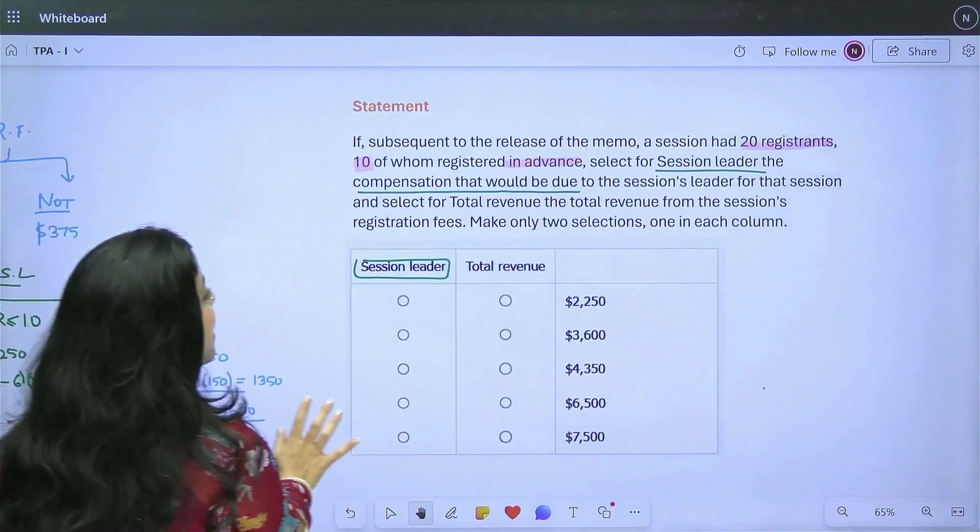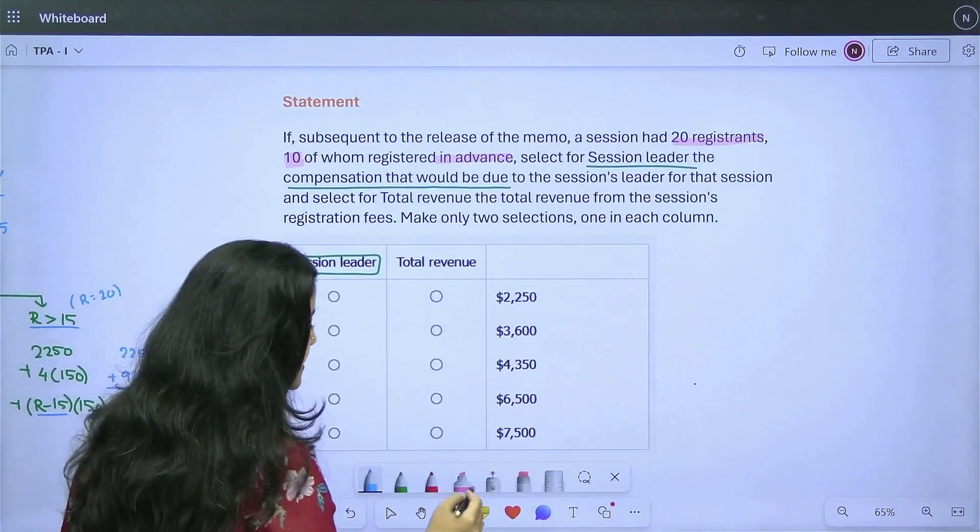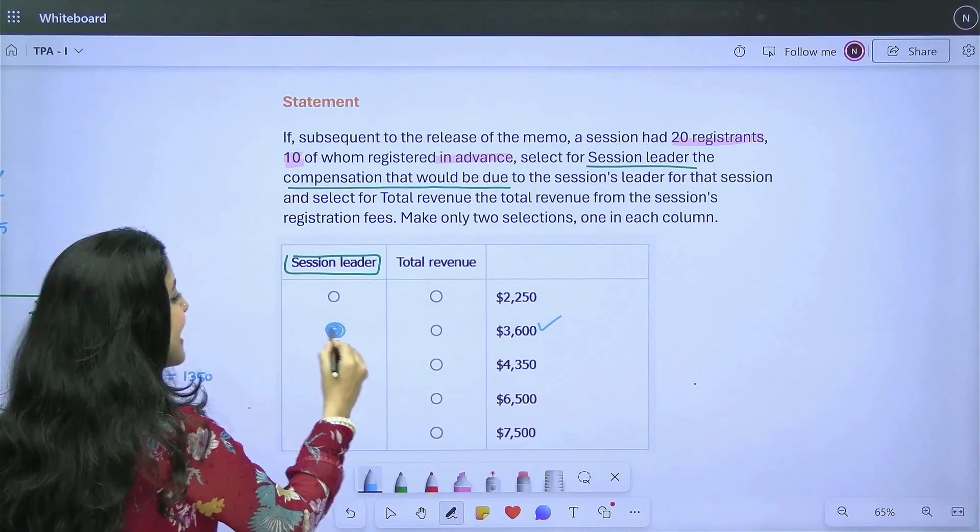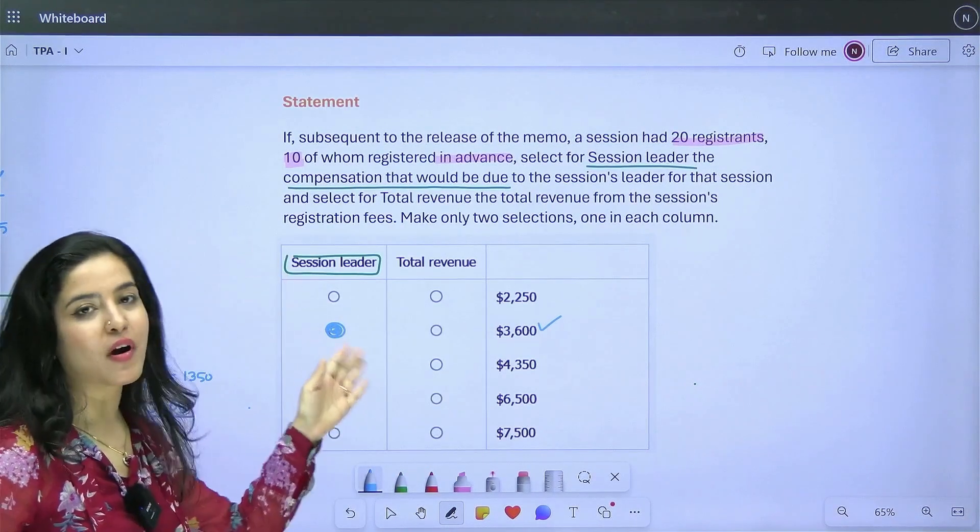Let's just come here and mark this. Where do I see 3600? It's right here. So, we mark the second row for our first column.